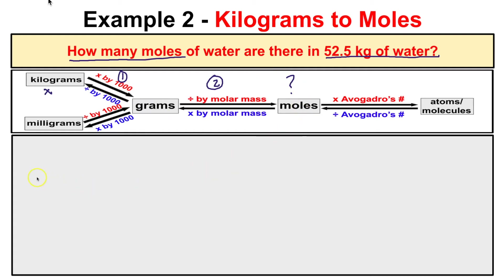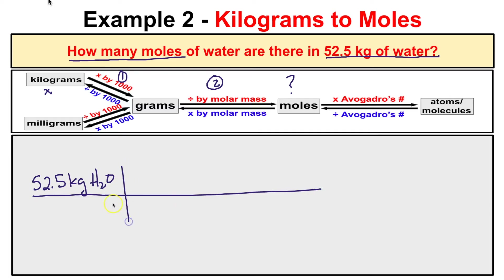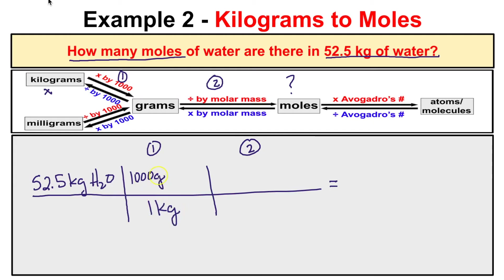We have 52.5 kilograms of H₂O. The first step is to convert the kilograms to grams. We know that there are 1,000 grams in a kilogram — the prefix kilo means a thousand. The grams go on top and the kilograms go on the bottom so that the kilogram units will cancel out.